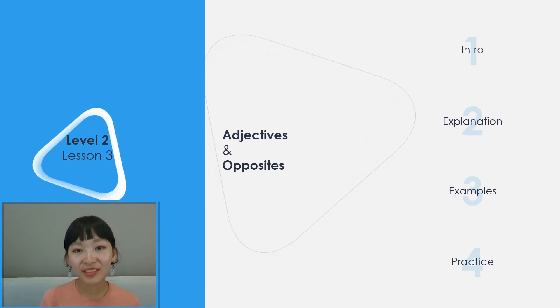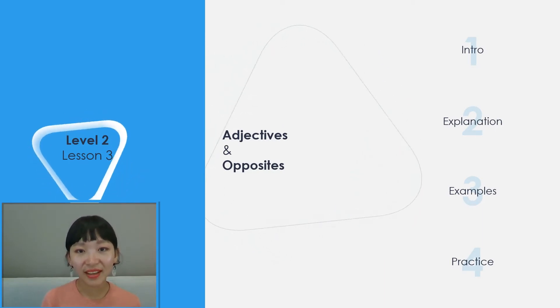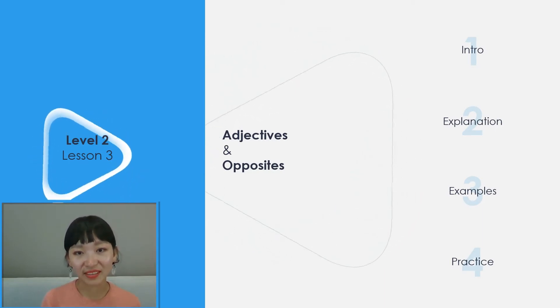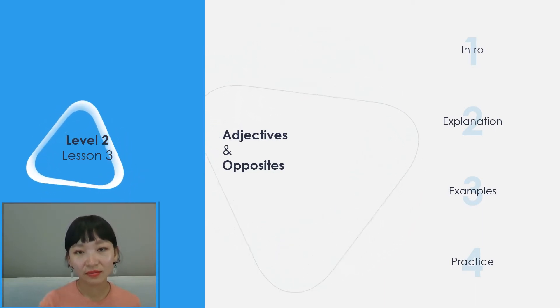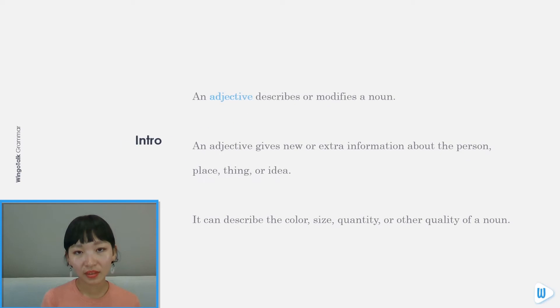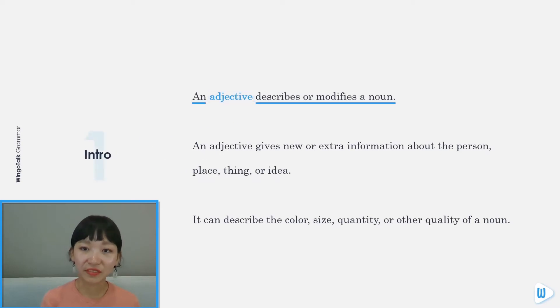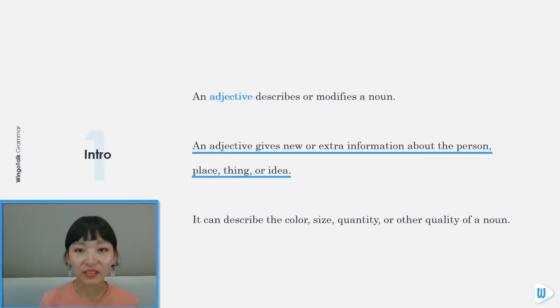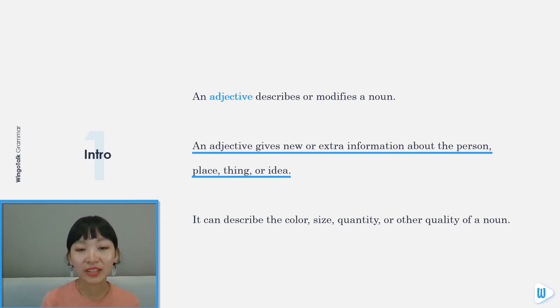Level 2 Lesson 3: Adjectives and Opposites. An adjective describes or modifies a noun. An adjective gives new or extra information about the person, place, thing, or idea.